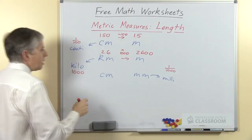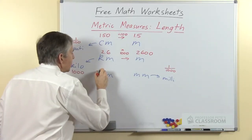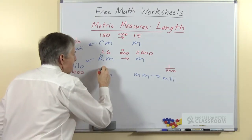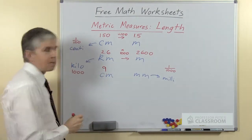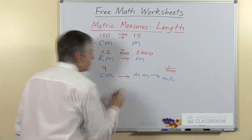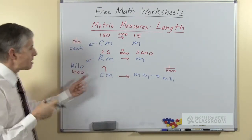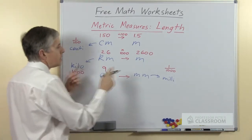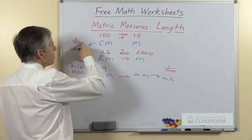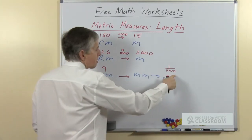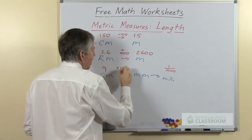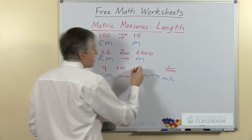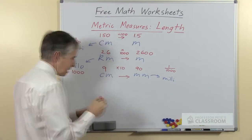The last of these quick examples, let's say we had 9 centimeters. Centimeters to millimeters, the prefix itself doesn't tell us, we have to look at the difference between the prefixes. This is a hundredth and this is a thousandth. The difference of course is 10. So we multiply centimeters by 10 to give us millimeters and that's 90.